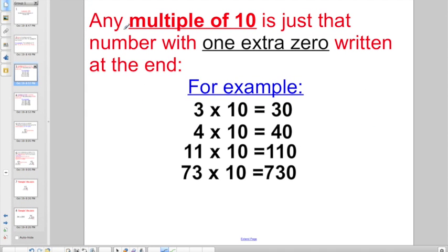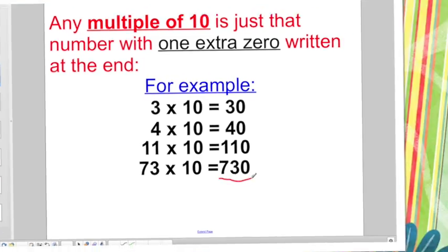So any multiple of 10 is just that number written with one extra zero. And we've been trying to get to that on mental math. 3 times 10 just has an extra zero, 30. 4 times 10, write down a 4, add an extra zero. 11 times 10, just think of 11 and add an extra zero to turn it into 110. Or 73 times 10, just visualize 73 with one extra zero, and you end up with 730.